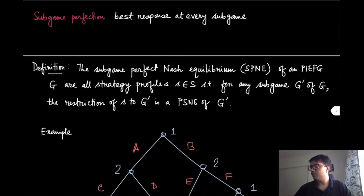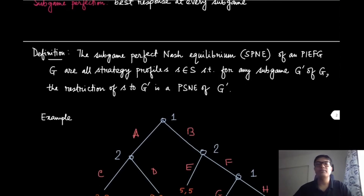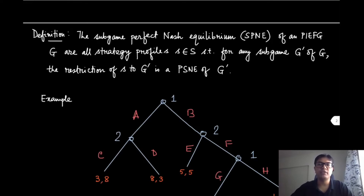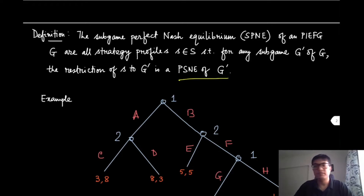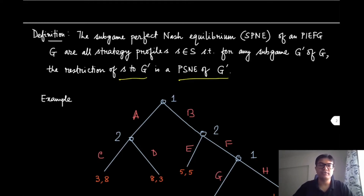What is the definition of a subgame perfect Nash equilibrium? This is a refinement of the equilibrium notion defined for the normal form game. The subgame perfect Nash equilibrium of a PIEFG are all such strategy profiles S such that for any subgame G prime of G, the restriction of S to G prime is a PSNE of G prime. By restriction, you just prune all the strategies not relevant for G prime — whatever remains is the restriction of S to G prime.